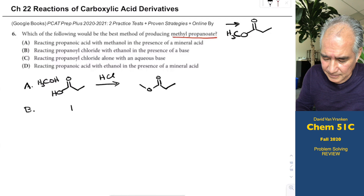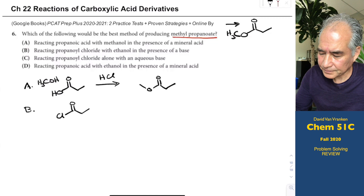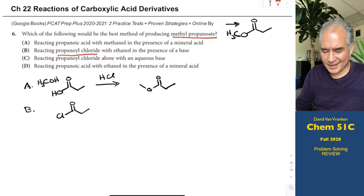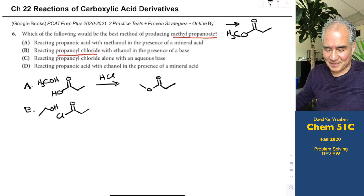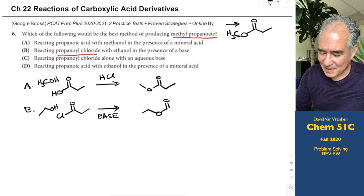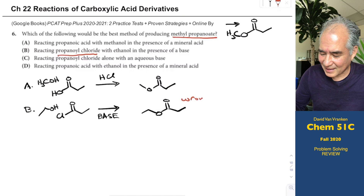Choice B: react propanoyl chloride with ethanol in the presence of a base (pyridine). Alcohols and acyl chlorides are a great way to prepare esters. But this would make the wrong ester — it would make an ethyl ester, not a methyl ester. Great reaction, but wrong product. Choice C: react propanoyl chloride with aqueous base — that means hydroxide anion. This would hydrolyze the acid chloride to a carboxylic acid, then the next molecule of hydroxide deprotonates it. You'd isolate a carboxylate — certainly not the ester you want.